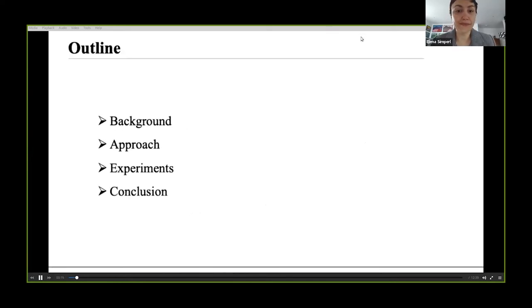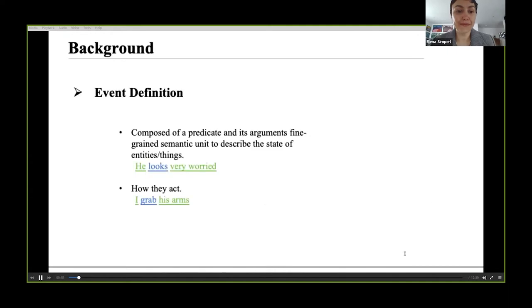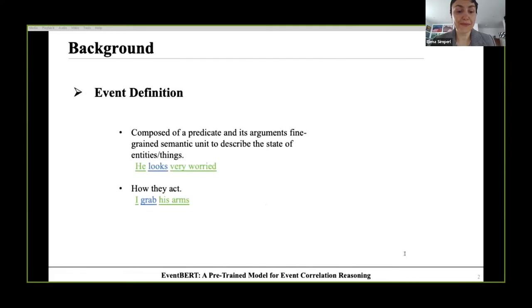I will introduce our work according to this outline. First, I introduce the task definition of event. An event, usually a text span composed of a predicate and its arguments, is a fine-grained semantic unit to describe the state of entity's things, for example, he looks very worried, and how they act, for example, I grab his arms.